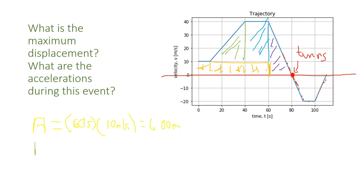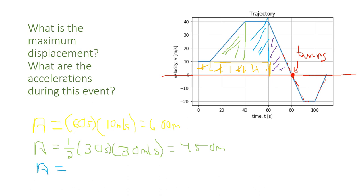Now let's do the green area. This is a triangle, and remember the area of a triangle is one-half base times height. So it's one-half times 30 seconds for the base, and our height is from 10 to 40, so that means a height of 30 meters per second, which gives us an answer of 450 meters.